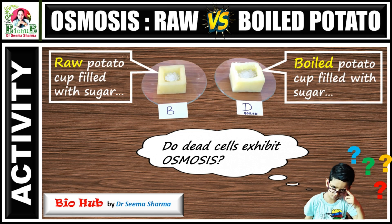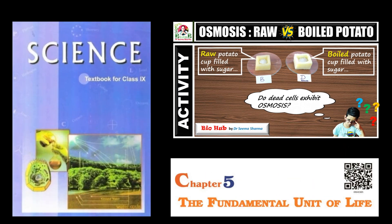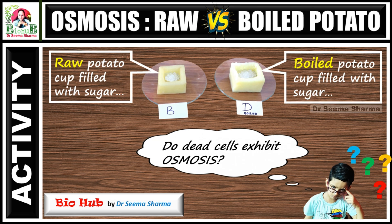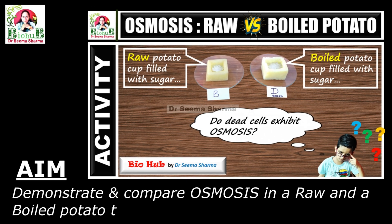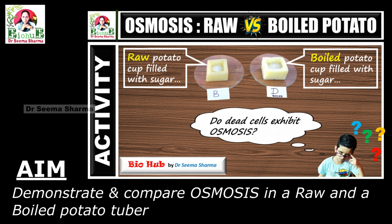Welcome to one more experimental video of Biohub. It's about the process of osmosis, taken from chapter 5, the fundamental unit of life, from the science textbook of class 9. This video will give you a complete insight about the theoretical as well as practical aspect of osmosis. The aim of this activity is to demonstrate the process of osmosis with the help of raw and boiled potato tubers. Before starting, let's learn about the meaning and importance of osmosis.